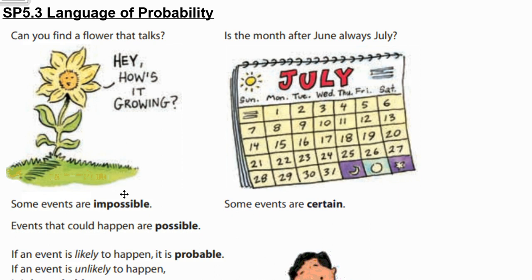So if I were to ask you to find a flower that talks, that's an impossible event. I would not be able to find any flowers in real life that talks. So events that cannot happen are impossible events, and events that could happen are possible.